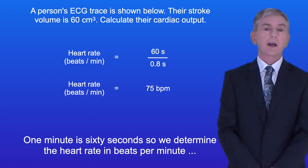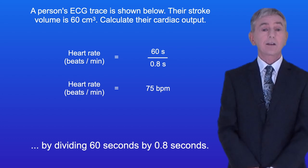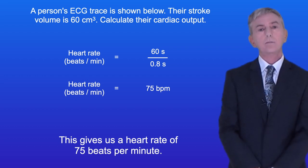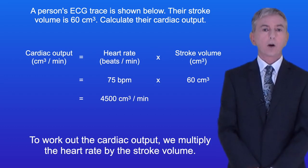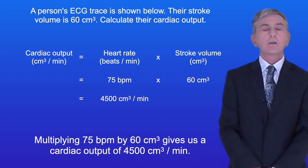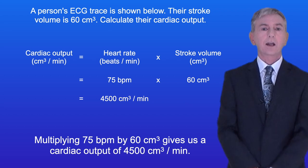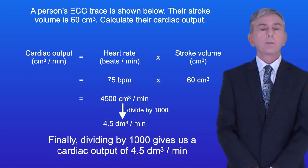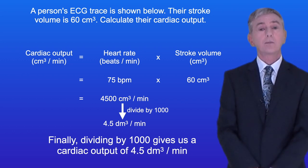One minute is 60 seconds, so we determine the heart rate in beats per minute by dividing 60 seconds by 0.8 seconds. This gives us a heart rate of 75 beats per minute. To work out the cardiac output we multiply the heart rate by the stroke volume. Multiplying 75 beats per minute by 60 centimeters cubed gives us a cardiac output of 4500 centimeters cubed per minute. Dividing by 1000 gives us a cardiac output of 4.5 decimeters cubed per minute.